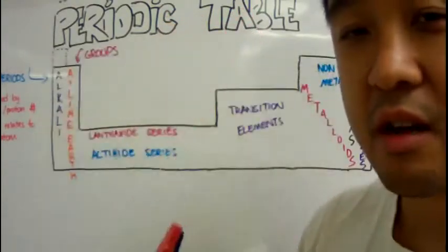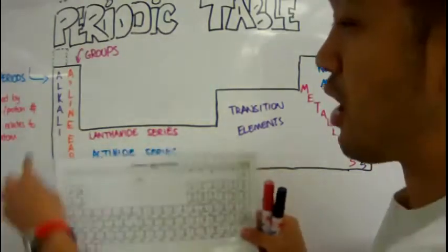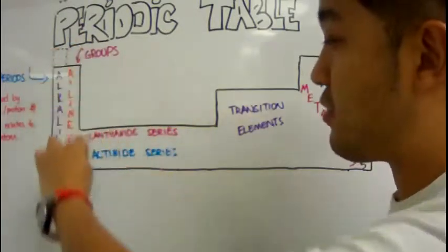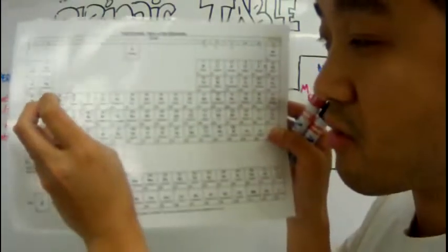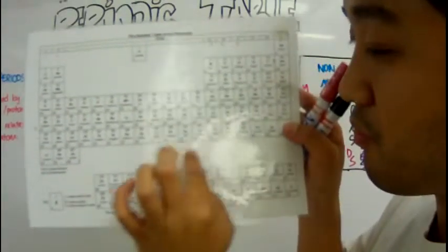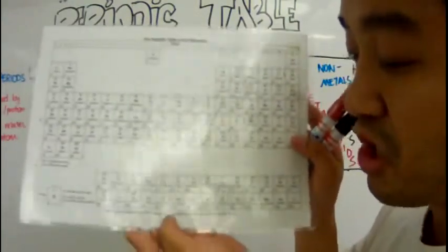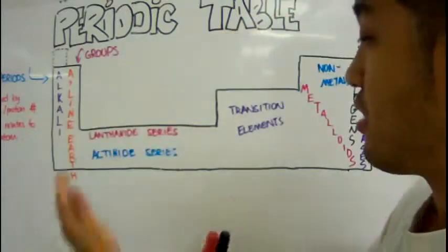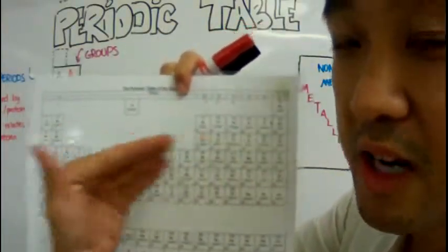It turns out the periodic table looks like this in its general shape: you have the two columns on the left, and right at the bottom you get something that jumps really far down. Those two rows at the bottom should actually be inserted right over here — at the last two rows of the periodic table. These elements have since been discovered and most have been named, but they're not in this version.